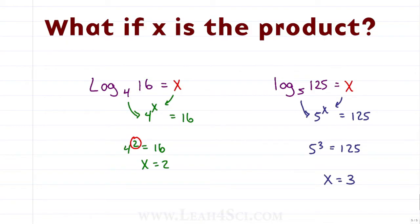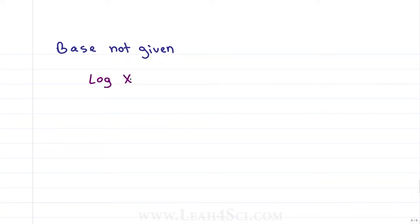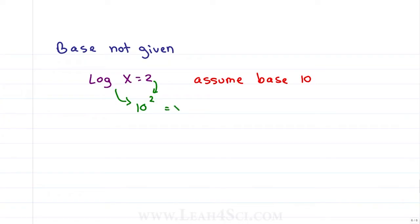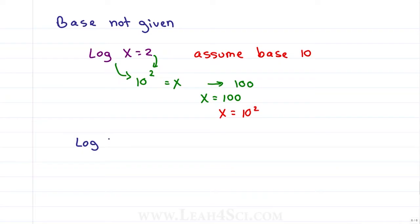What happens if the log base is not given? It's not uncommon to see problems like this on the MCAT where you have log of x equals 2 but there's no base. When the base is not given on the MCAT, you assume base 10 and treat the problem the same way. We pull down the base and ask: 10 to the power of 2 is equal to x. 10 to the second is scientific notation for 100, so x equals 100.